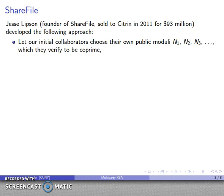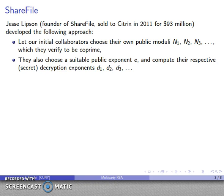The idea is to set up a whole bunch of individual RSA systems. The initial collaborators each use a standard RSA approach and set up their own public moduli N1, N2, N3, and so on. One important requirement is that they must verify these moduli are all co-prime, because otherwise the entire system is insecure. As a group they choose a suitable public exponent E, and individually each person computes their own secret decryption exponent D1, D2, and so on.